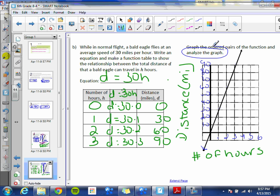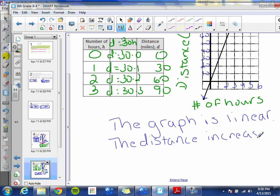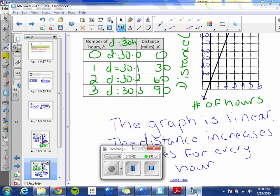Lastly, we have to analyze the graph. So again, we would say the graph is linear because it's a straight line. And now let's say something more specific about this graph. We can say the distance, what does it do, increase or decrease? Does it get bigger or smaller? It increases, it gets bigger. It increases 30 miles for what? Good, every hour. And that's the end of lesson four.